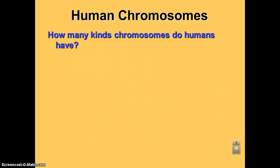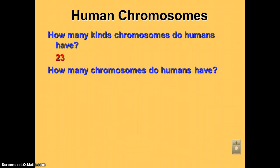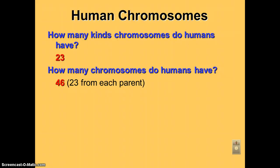First, we're going to talk about chromosomes. How many different kinds of chromosomes do humans have? That would be 23 — we have 23 different kinds of chromosomes. So how many total chromosomes do we have? It's 46. Why is it 46? Because you got 23 from one parent and 23 from the other parent. A male sperm cell will have 23 chromosomes, a female ovum or egg cell will have 23 — put them together, 46.